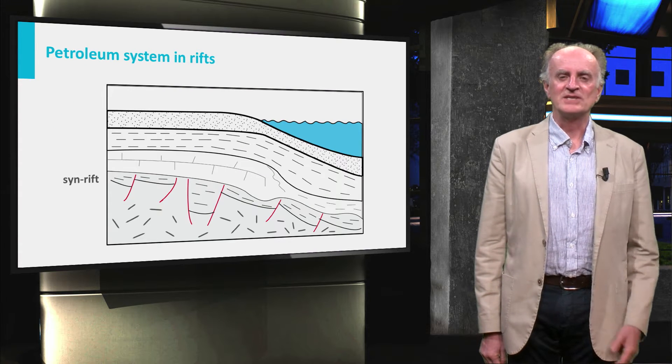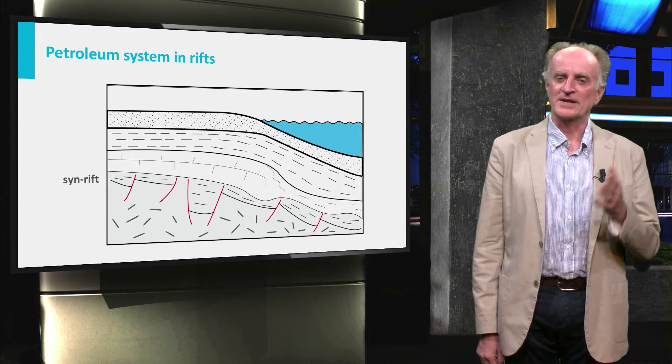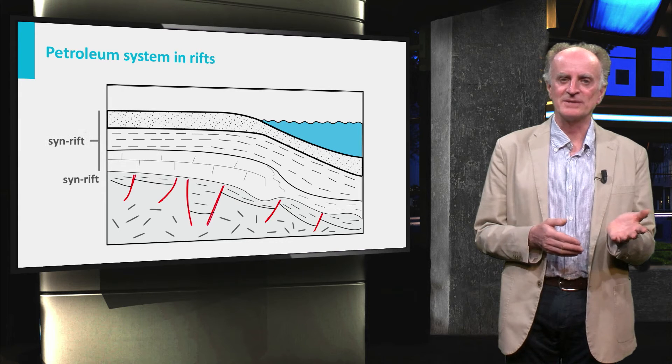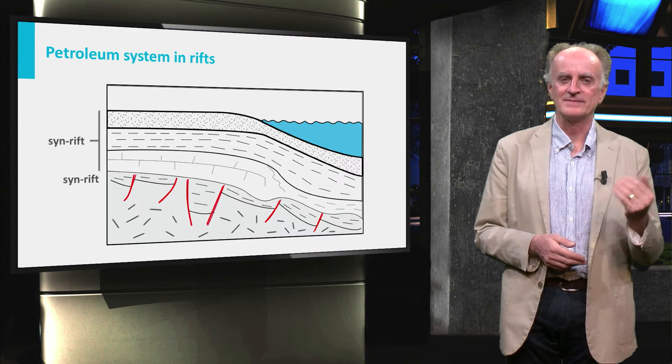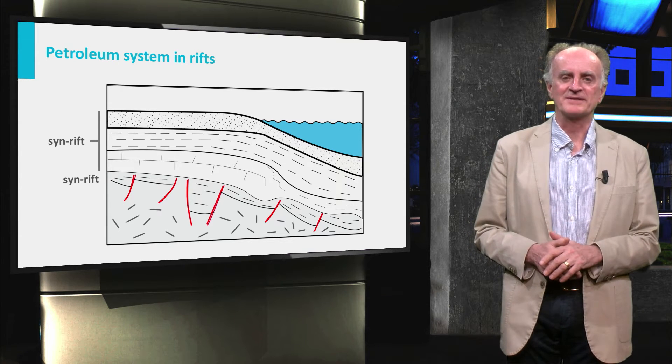In the slide you see a generalized section across a rifted continental margin. You can recognize easily the normal faults and the sedimentary succession deposited prior to, during, and following rifting. We have called these pre-rift, syn-rift, and post-rift respectively.